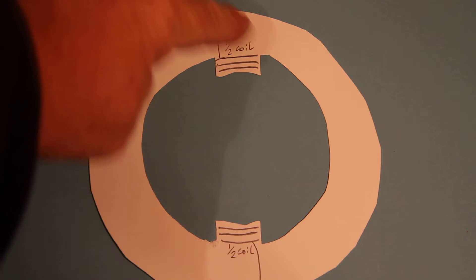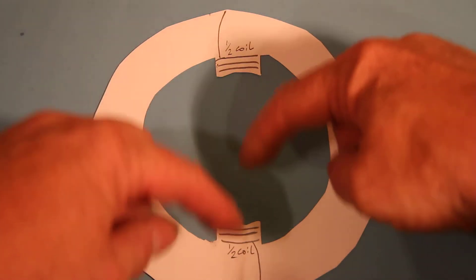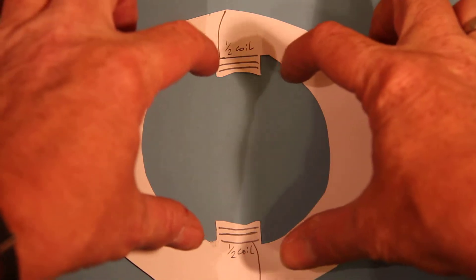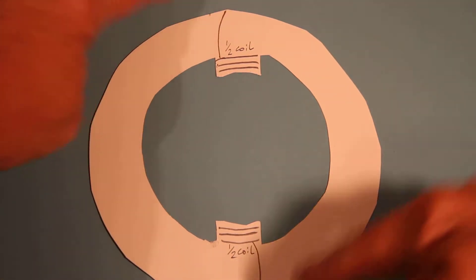Here's my primary coil now, but this time I've split it into two. I've stretched it, there's a gap in the middle and it's still connected to the DC supply here.